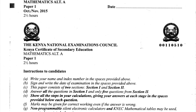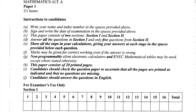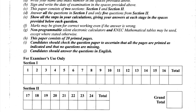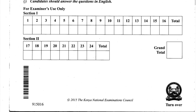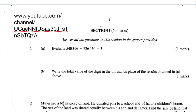In this video I'll be going through paper 1 of the 2015 KCST Maths exam. The paper in total has 24 questions: 16 questions in section 1 and 8 questions in section 2. So let's start.